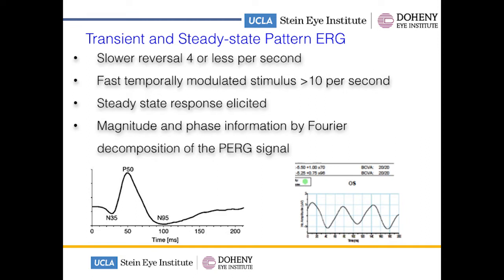In transient, you have first a negative wave of an N35 negative amplitude shift. That is followed by the positive or P50 amplitude shift and then a larger N95 amplitude. This is elicited by the pattern stimulus of 4 per second or less.